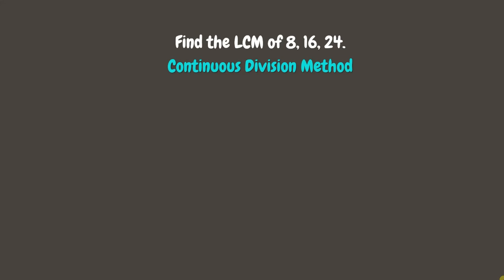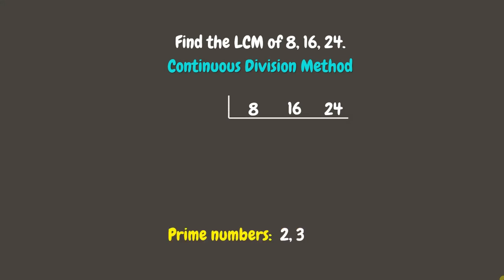The first step is to list the numbers horizontally. Same as finding the Greatest Common Factor, we need to divide them by prime numbers if possible. Remember, prime numbers are 2, 3, 5, 7, 11, 13, and so on. Let us start dividing them by the smallest prime number, which is 2. 8 divided by 2 is 4, 16 divided by 2 is 8, and 24 divided by 2 is 12.